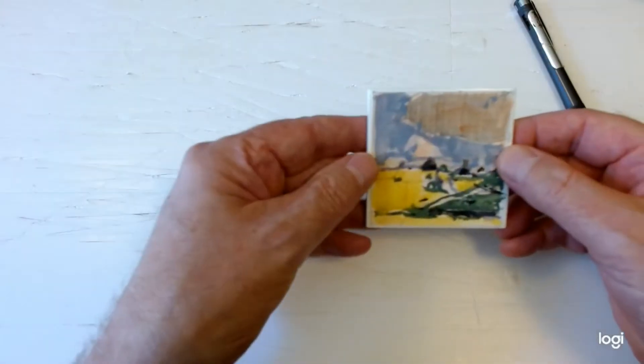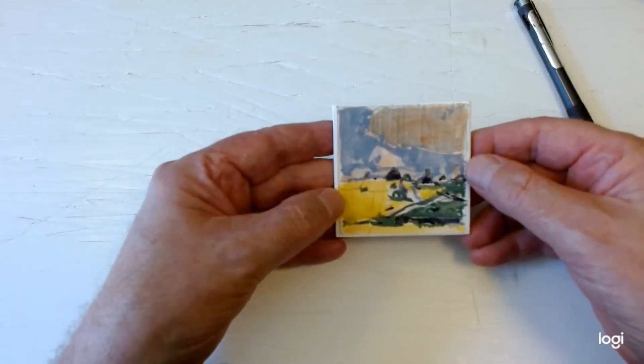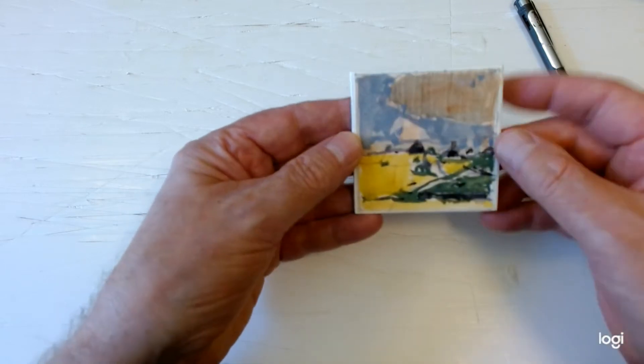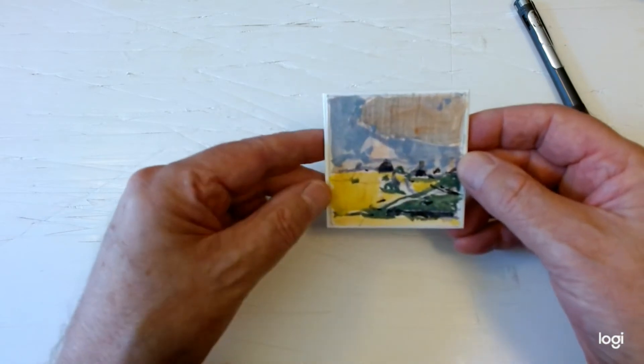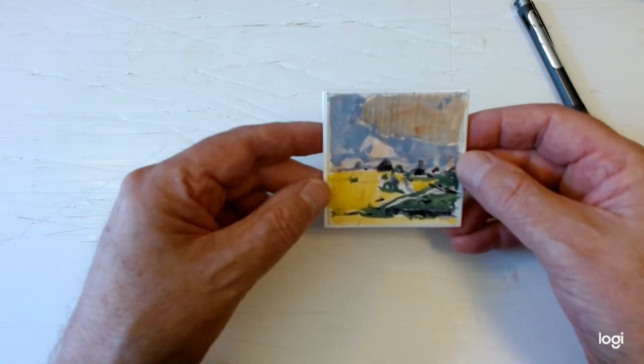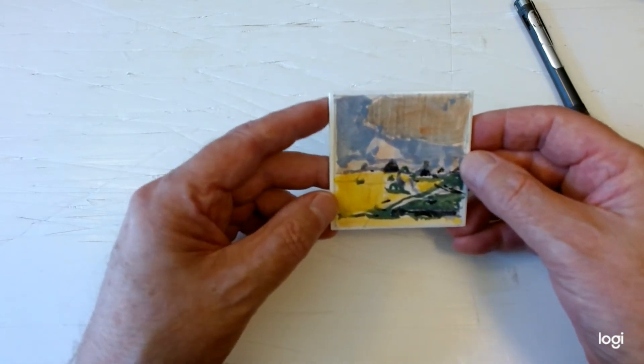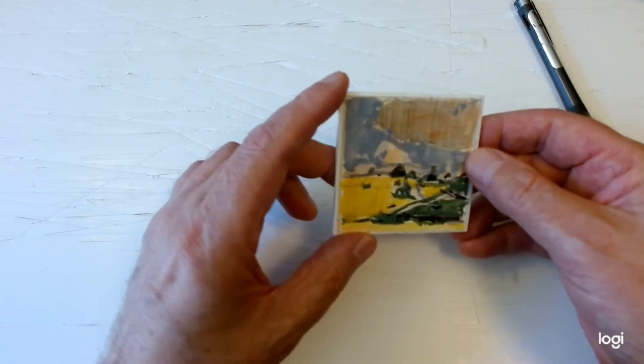There are landscapes like this which are gouache, again on paper, just thin paper. But not from observation. In studio, from sort of thinking, imagination, invention. Not looking at anything as I make it.